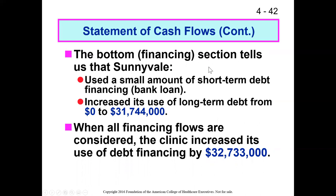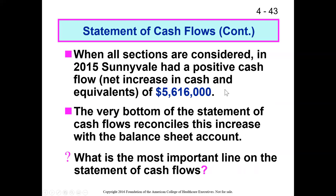In the financing section, Sunnyvale took on some short-term debt, which results in an increase in cash when you get a loan from a bank, and they increased their long-term debt by $31 million. A significant increase in debt financing — some current and some long-term — brought in $32 million in cash. When all three sections are combined, they had an overall positive cash flow, and the very bottom of the cash flow statement shows how much cash they have on hand to actually pay their bills.